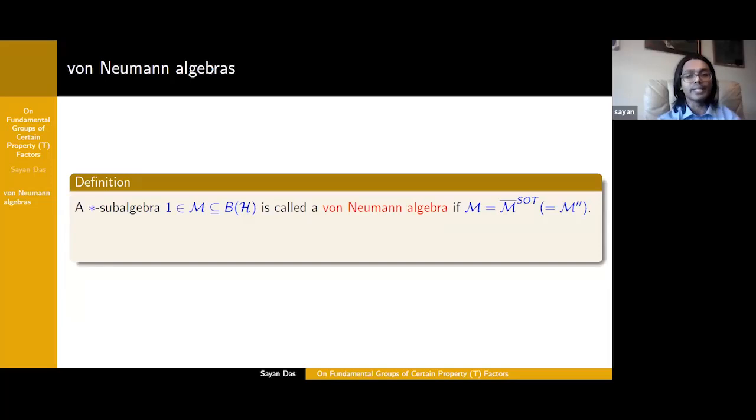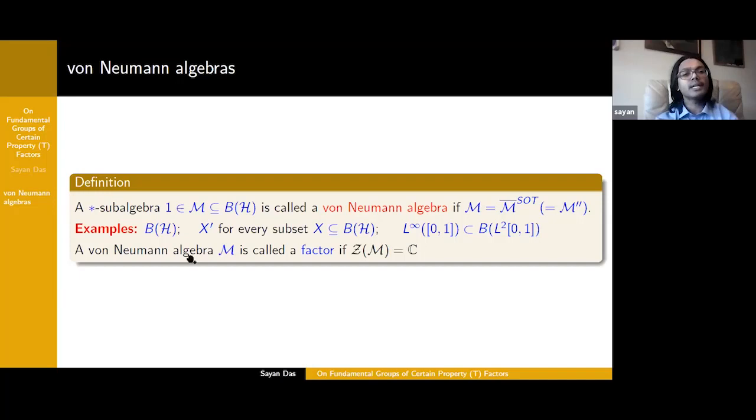Examples are easy to obtain. B(H) itself would be a von Neumann algebra, H could be finite or infinite dimensional, and also you have L infinity of (0,1). Notice that L infinity is an abelian von Neumann algebra and is very different from B(H), which does not have a center. We call a von Neumann algebra M to be a factor if the center is trivial. The study of von Neumann algebras breaks down into the study of factors and study of abelian von Neumann algebras. We shall be mostly interested in the study of factors.